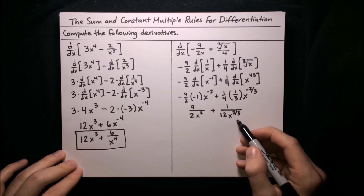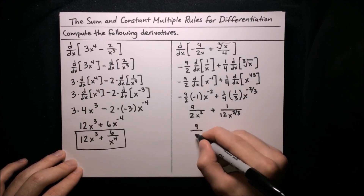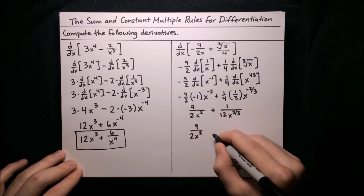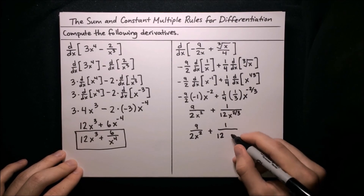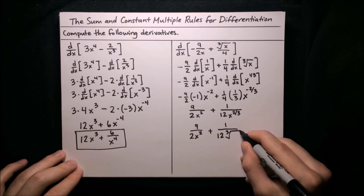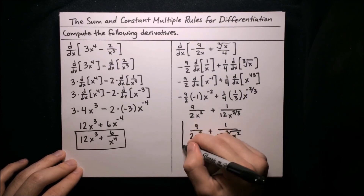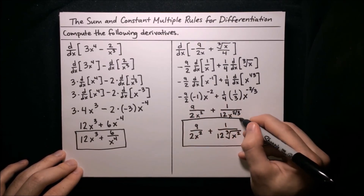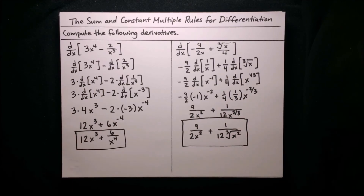Lastly, write in cube root form since that's how the expression was originally phrased. 9 over 2x squared stays the same since the exponent is a whole number. For 1 over 12x to the 2 thirds, since this is a fractional exponent with denominator 3, we use cube root: 1 over 12 times the cube root of x squared. So the derivative is 9 over 2x squared plus 1 over 12 times the cube root of x squared. Now we know how to apply the sum and constant multiple rules for differentiation, and in the future we'll continue to learn more rules.